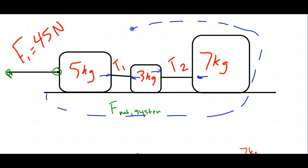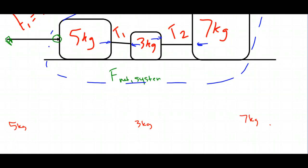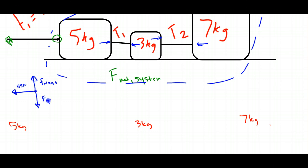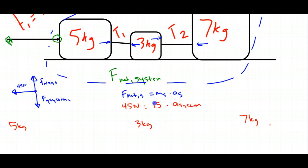The net force on the system is 45 newtons to the left, and the combined normal force and gravitational force cancel vertically. So Fnet equals mass of the system times acceleration of the system: 45 equals 5 plus 3 plus 7, which is 15 kilograms, times the acceleration. The result is that the acceleration of the system is 3 meters per second squared.